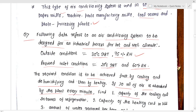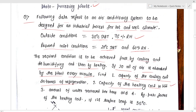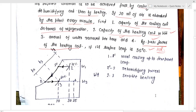We need to find: (1) capacity of the cooling coil in TR, (2) capacity of the heating coil in kilowatts, (3) amount of water removed per hour, and (4) bypass factor of the heating coil given its surface temperature is 35 degree centigrade. The required condition is achieved first by cooling, then dehumidifying, then heating.